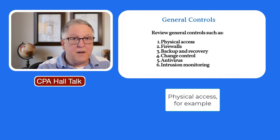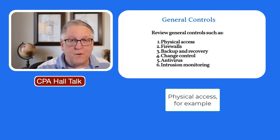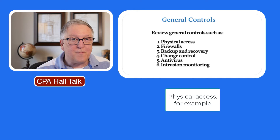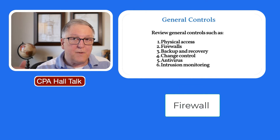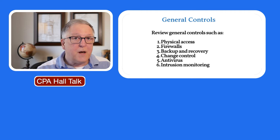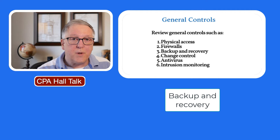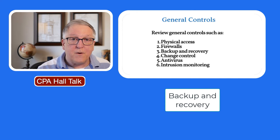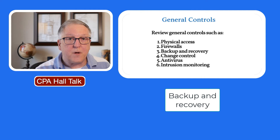If a client just allowed anybody to go into the IT room and do whatever they wanted on a computer, the risk of material misstatement goes up. If you don't have a firewall and people from the outside can easily intrude the system, risk goes up. If they're not backing up the system or don't have the ability to recover when the system goes down, then there's no way to get back to where they were. You want to make sure they have sufficient backup and recovery techniques.